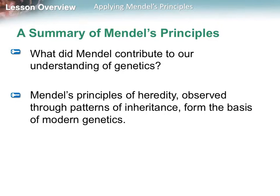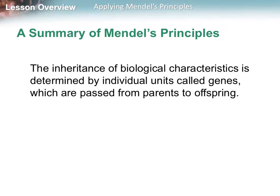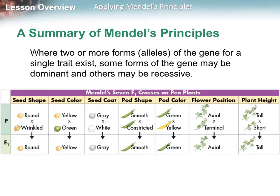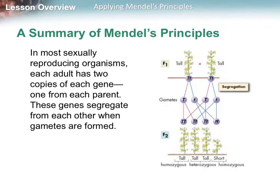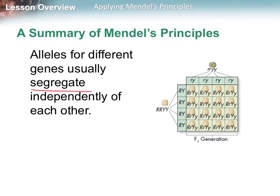So what has Mendel taught us? Mendel contributed to our understanding of genetics by explaining basic principles of heredity through observed patterns, forming the basis of modern genetics. The inheritance of biological characteristics is determined by individual units called genes, passed from parents to offspring. Where two or more forms of a gene exist, some can be dominant and others recessive. In most sexually reproducing organisms, each adult has two copies of each gene — one from each parent — and these genes segregate independently when gametes are formed.